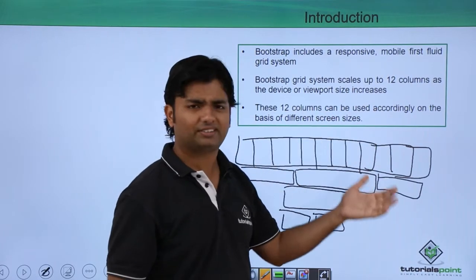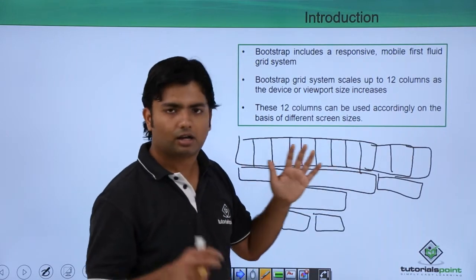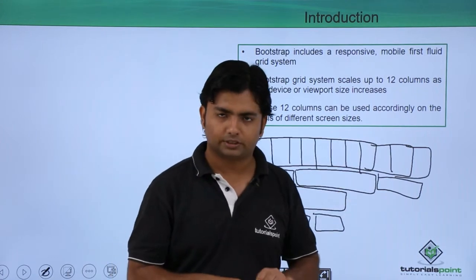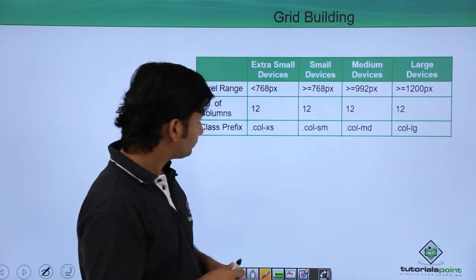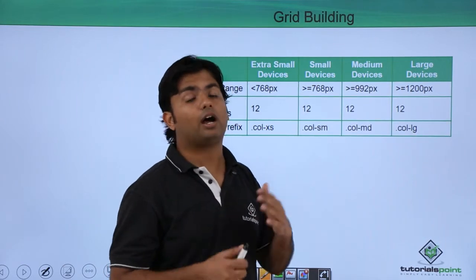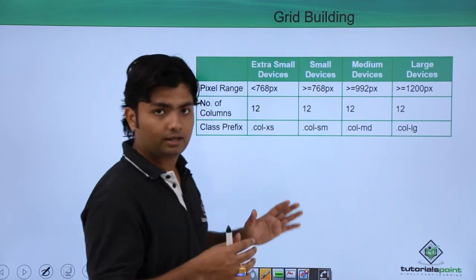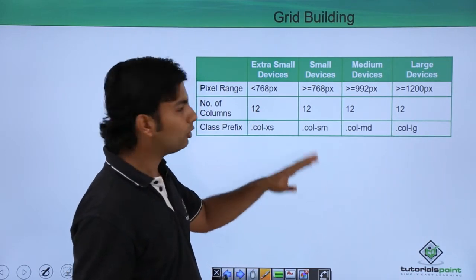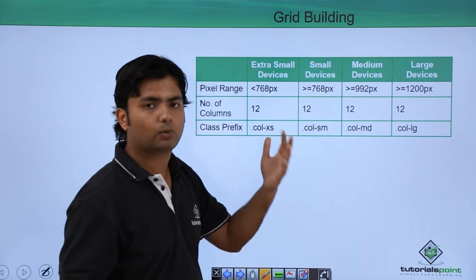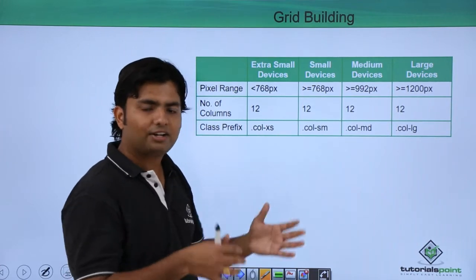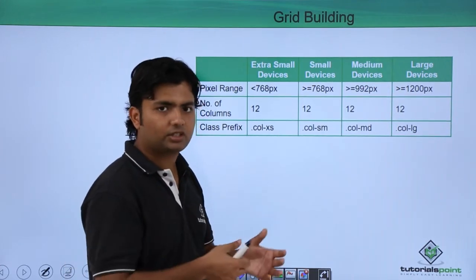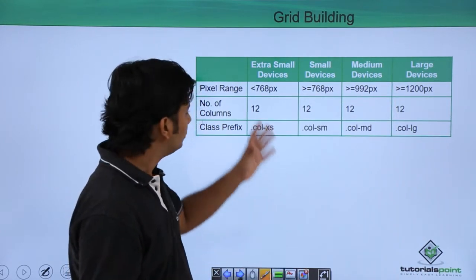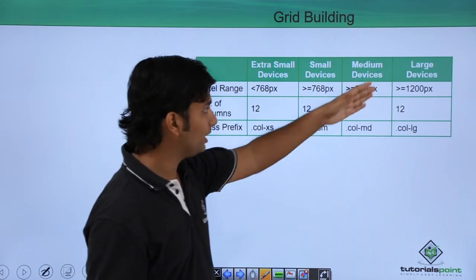It all depends on how you want to consume your twelve columns. Let's see how you can manage them and determine which screen is large and which is small. This is based on the number of pixels for each screen. I'll show the practical implementation on a 14-inch laptop, so I won't be able to demonstrate large device sizes.